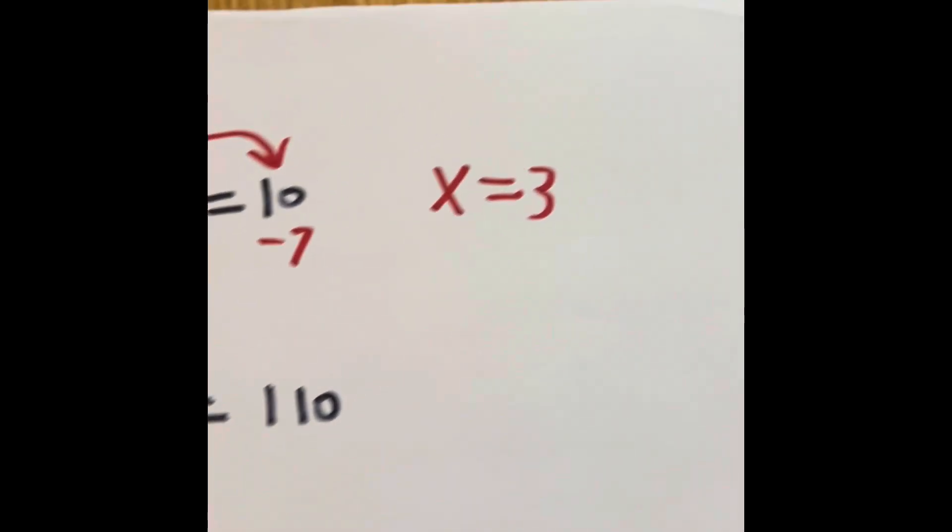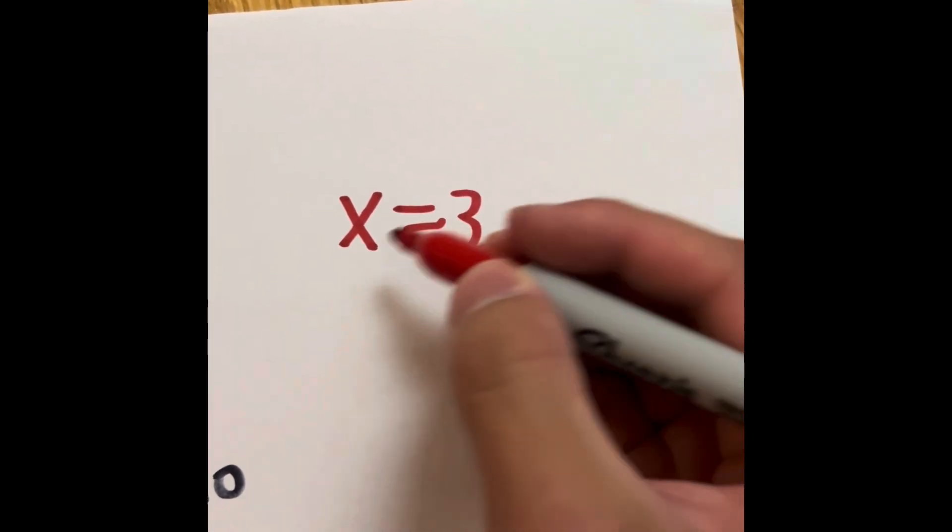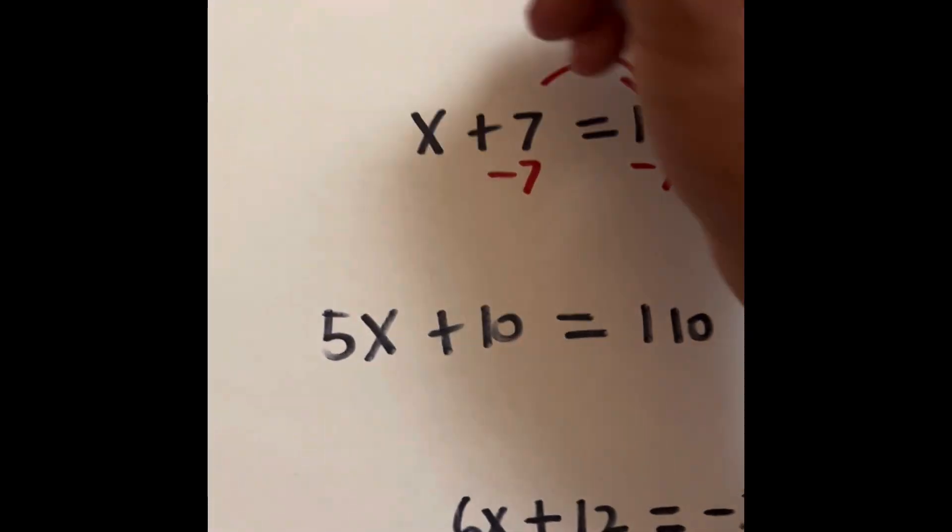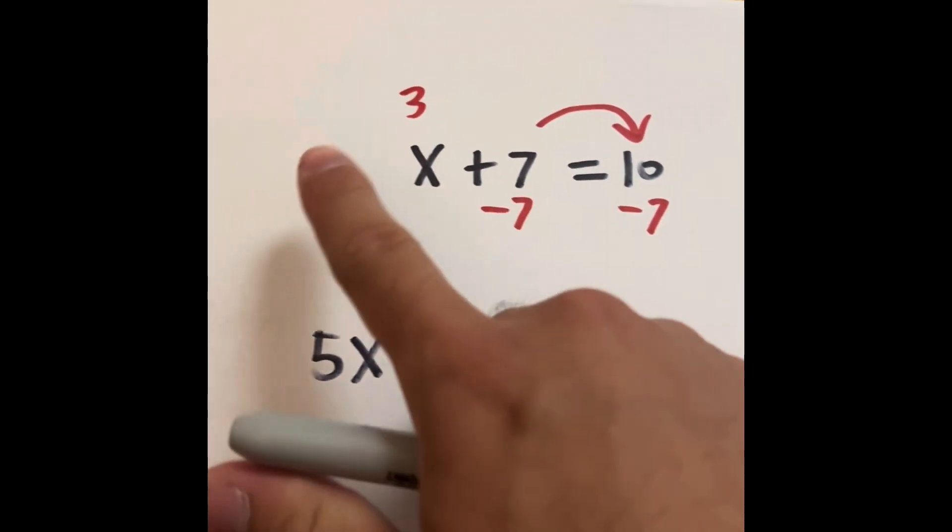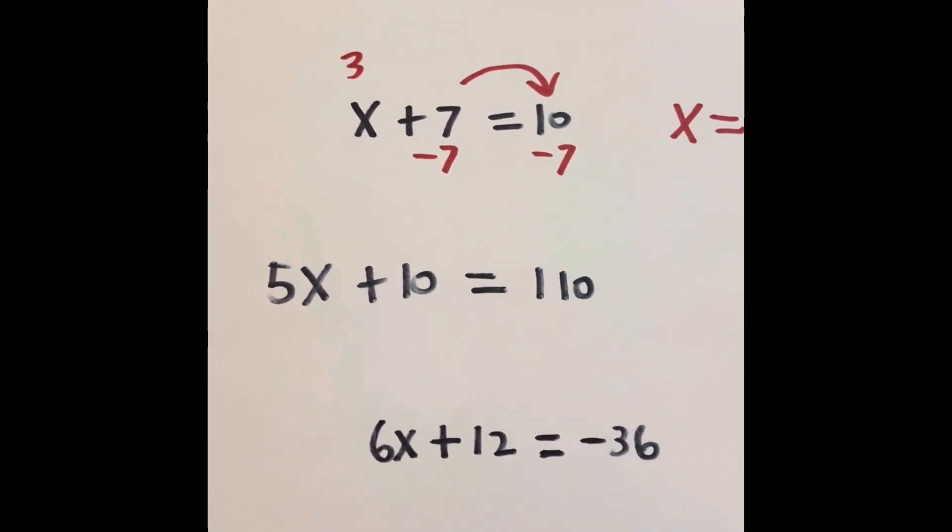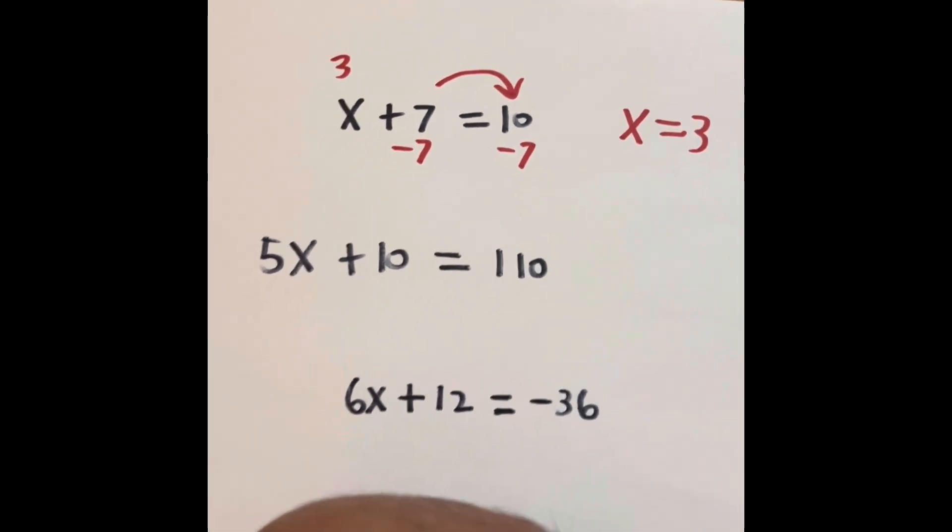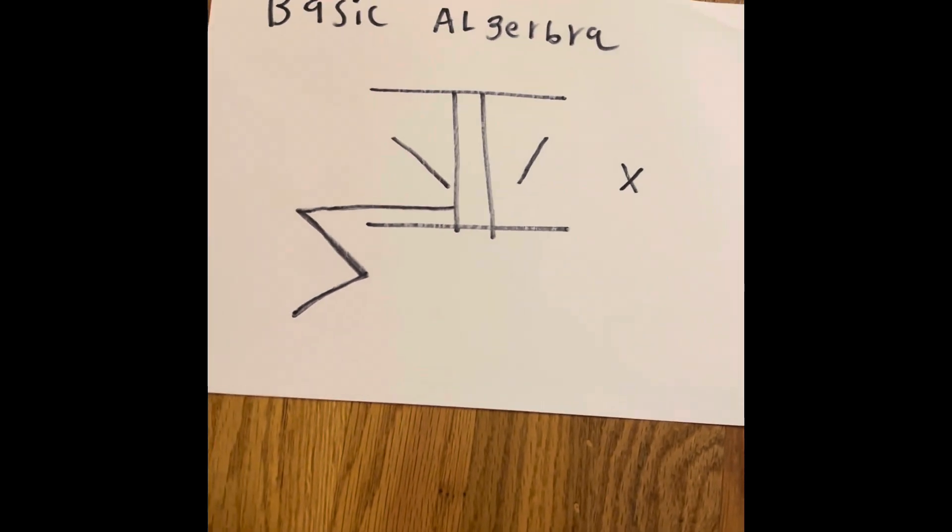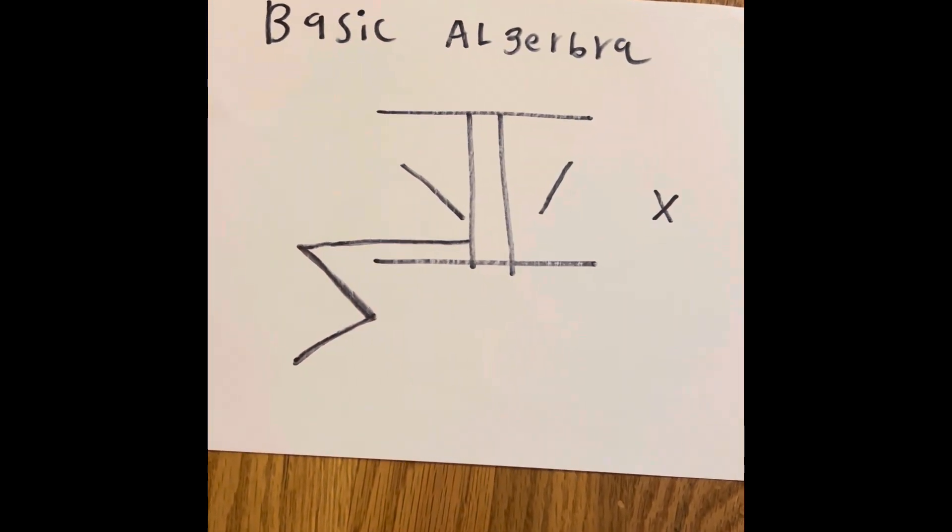We can say that x is going to equal 3 because 10 minus 7 is 3. In this case, x equals 3. If you put 3 into x, 3 plus 7 equals 10.